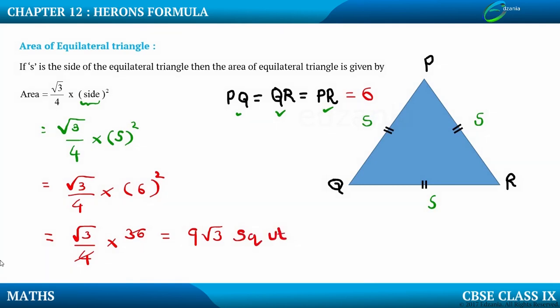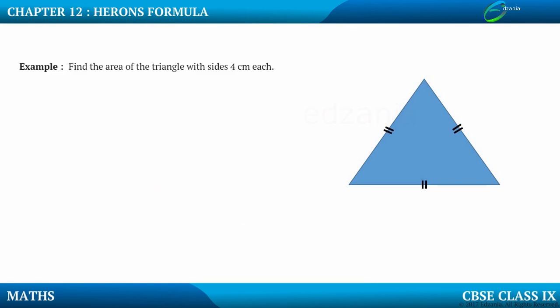So let us take one more example. Here is an equilateral triangle for you. Find the area of the triangle with sides 4 centimeter each. The sides are 4 centimeter each, that is this side is 4 centimeter, also this side is 4 centimeter, also this side is 4 centimeter.